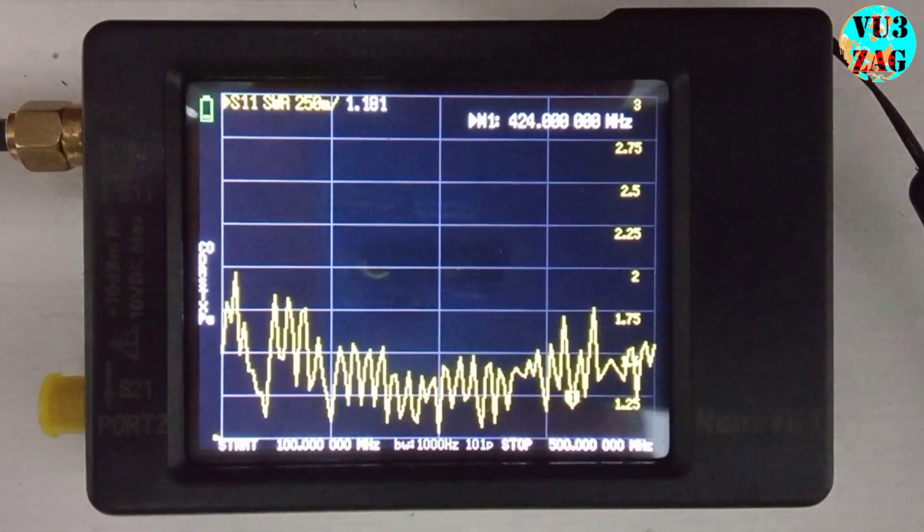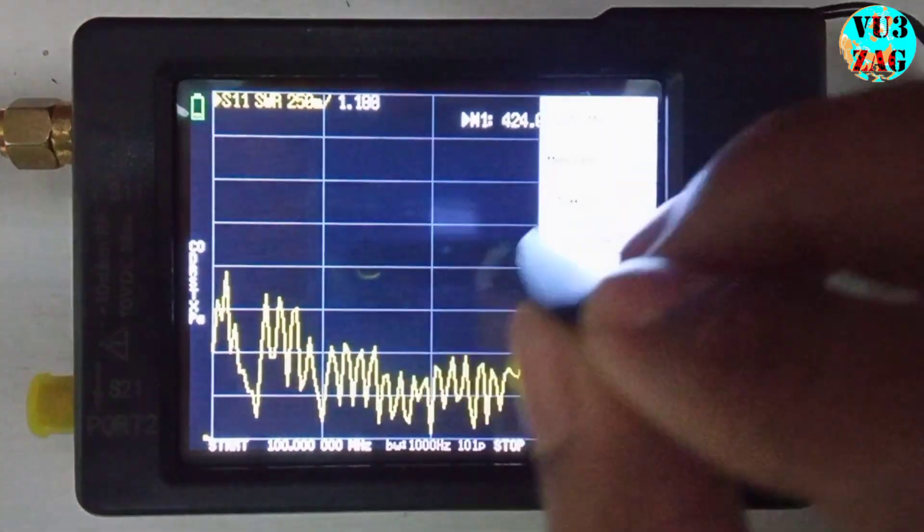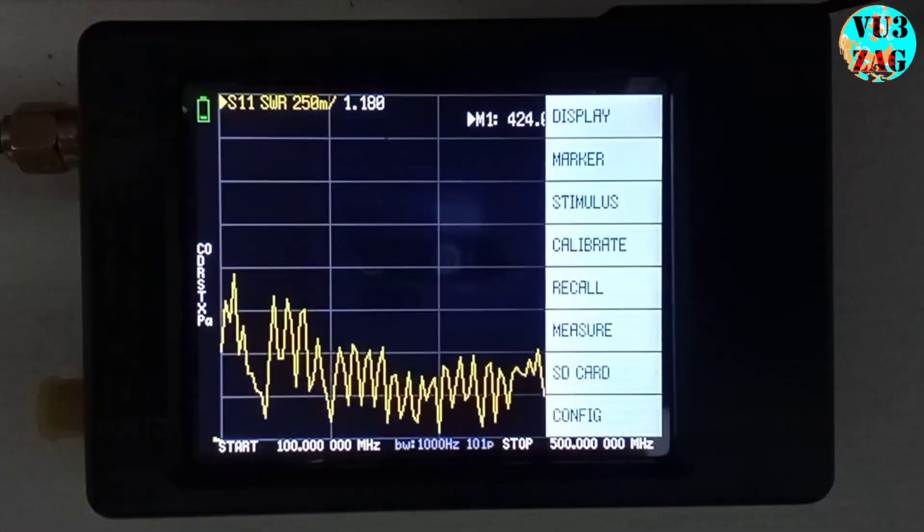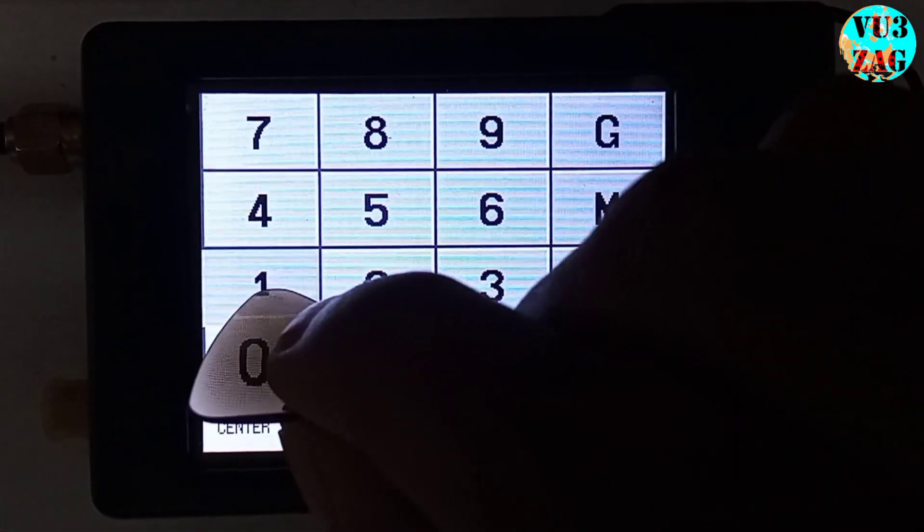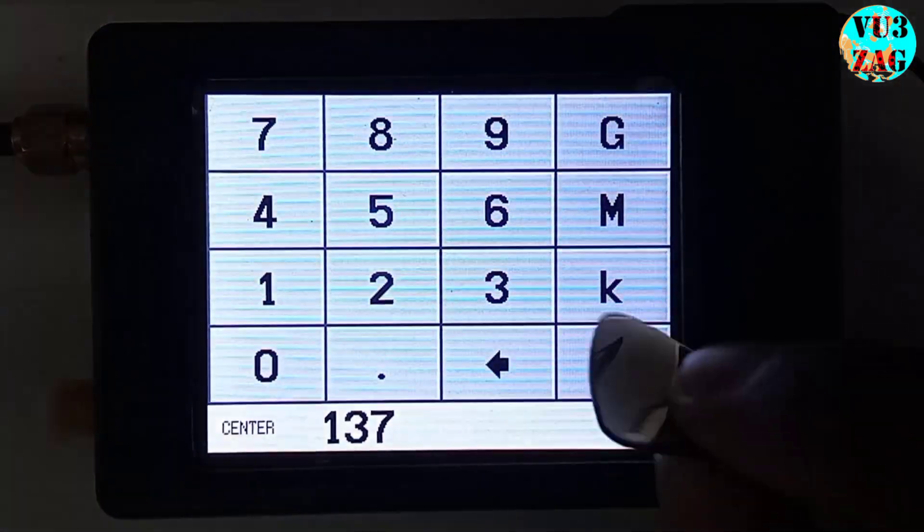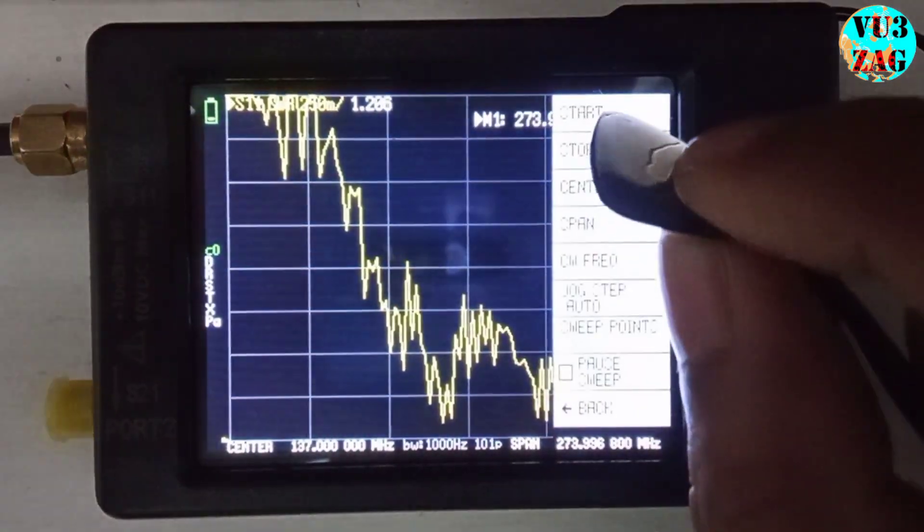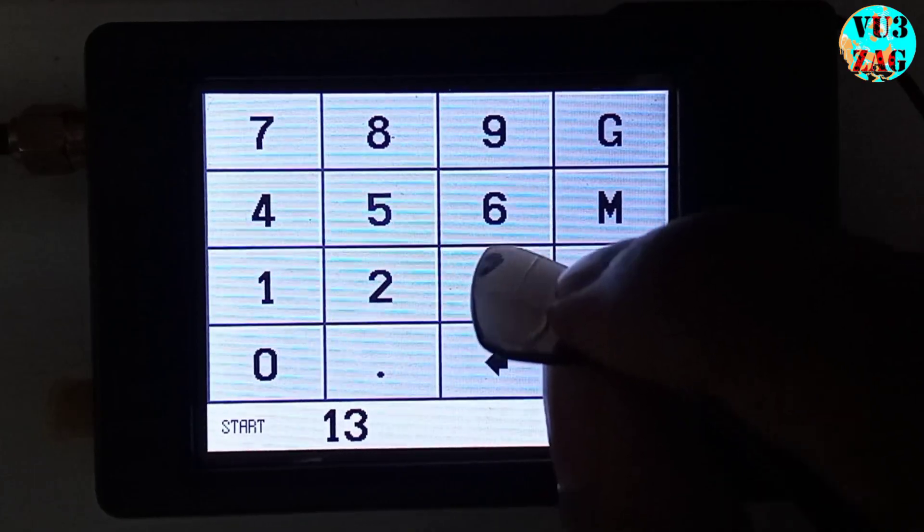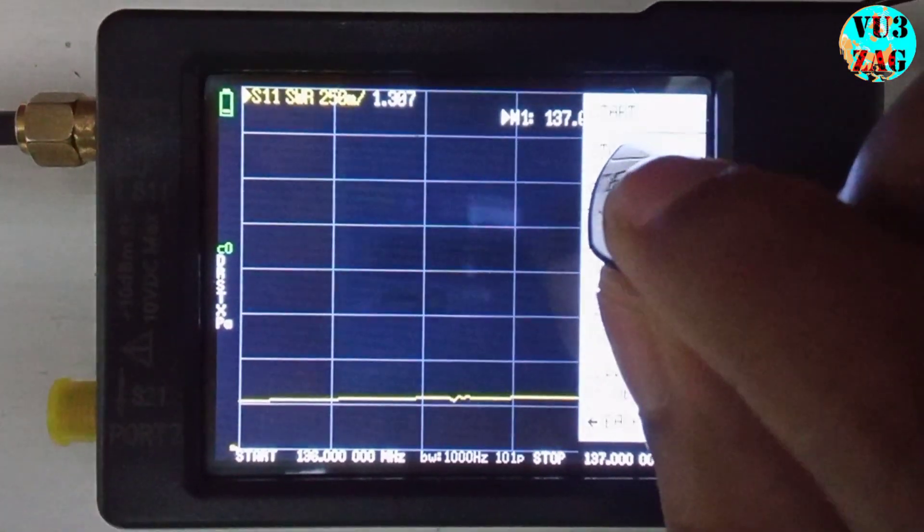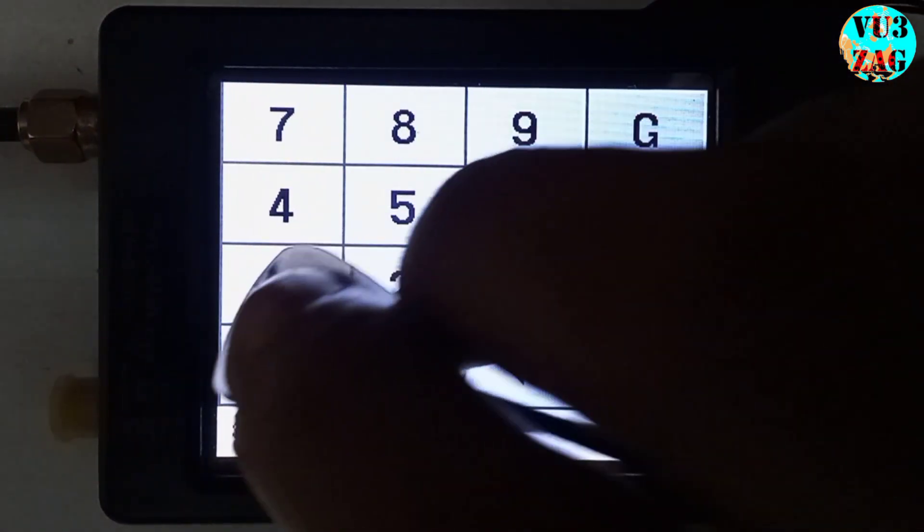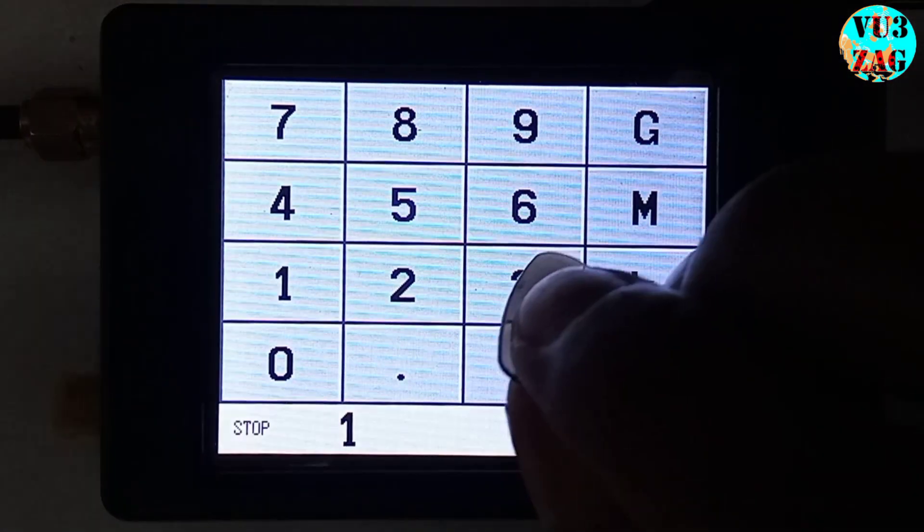I will be using nanoVNA for analyzing this antenna. I have connected the antenna on the S11 port of a nanoVNA and trying to measure SWR. Fixing the center frequency as 137 MHz, that's the desired frequency, starting frequency as 136 MHz, and stop frequency as 138 MHz.